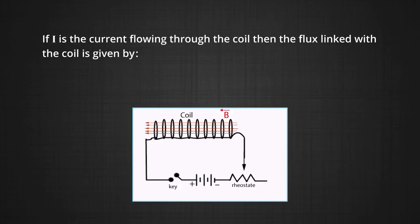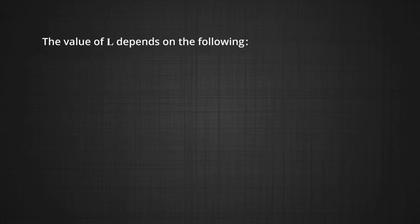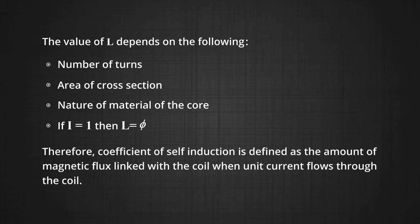If I is the current flowing through the coil then the flux linked with the coil is given by phi, which will be proportional to I. Removing the proportionality sign we can say phi is equal to L into I, where L is the constant of proportionality and is called the coefficient of self-induction. The value of L depends on the number of turns, area of cross-section of the coil, and nature of the material of the core. If I is equal to 1 then L becomes equal to phi. Therefore, we can define the coefficient of self-induction as the amount of magnetic flux linked with the coil when unit current flows through the coil.